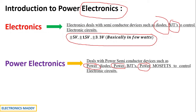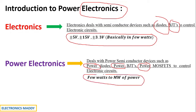Whereas if you talk about power electronics, you will be having few watts to megawatt amount of power. The current carrying capacity in these devices will be up to kilo amps, which is very, very high. Whereas in electronic circuits, it will be maximum up to 1 to 5 amps — that is the maximum current rating these devices are capable of handling.